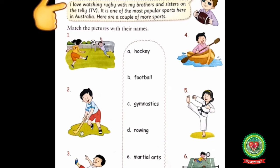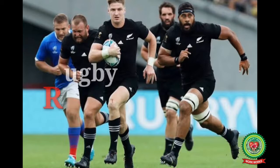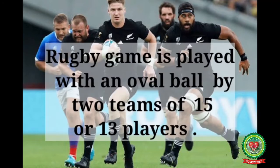Put your finger on the first line of this chapter: 'I love watching rugby with my brothers and sisters on the telly' — meaning TV. It is one of the most popular sports here in Australia. The child here is talking about the rugby game, which he loves to watch on television with his brothers and sisters, and it is one of the most popular games of Australia.